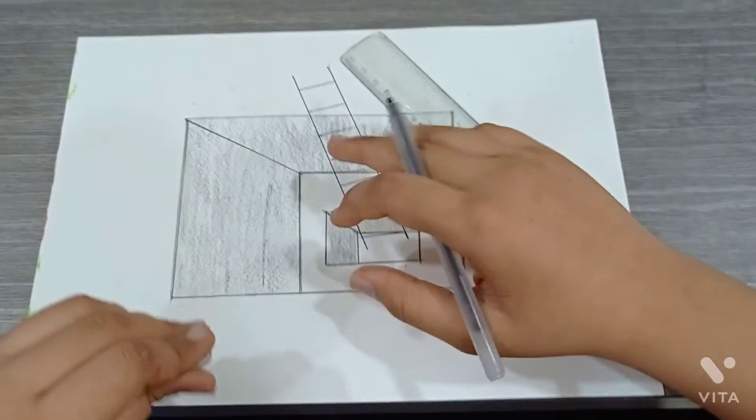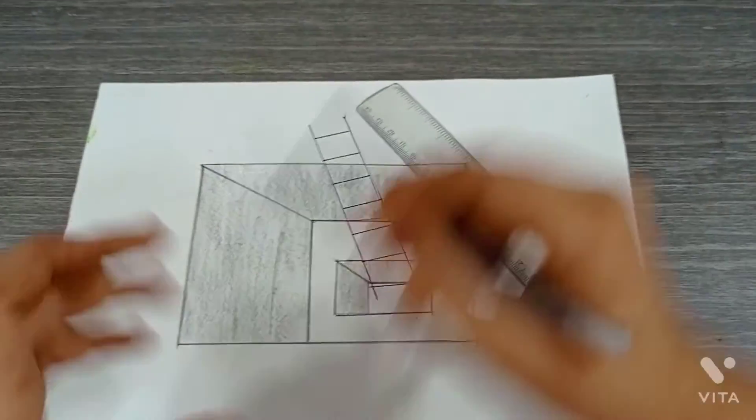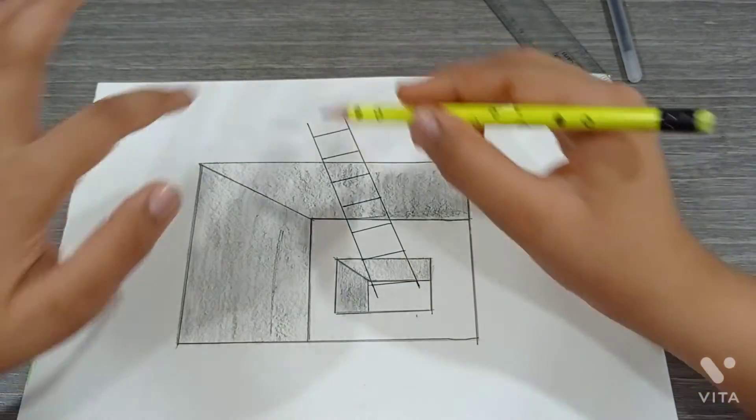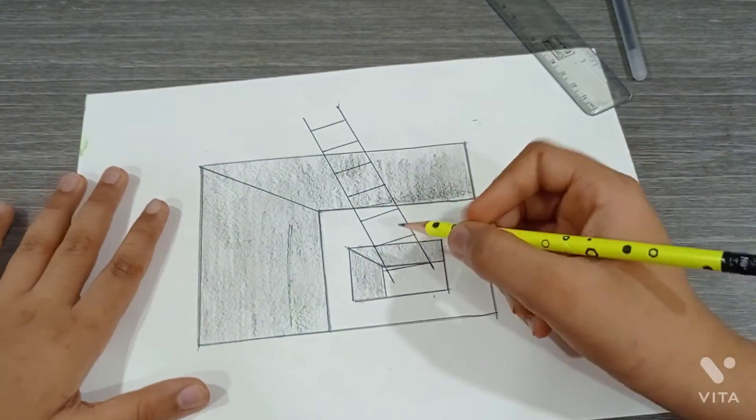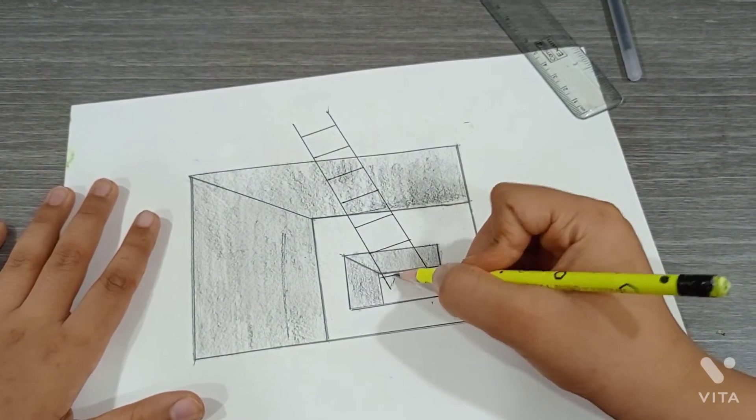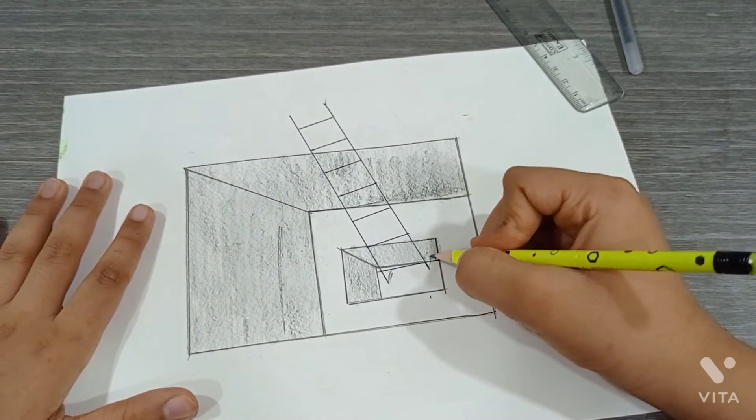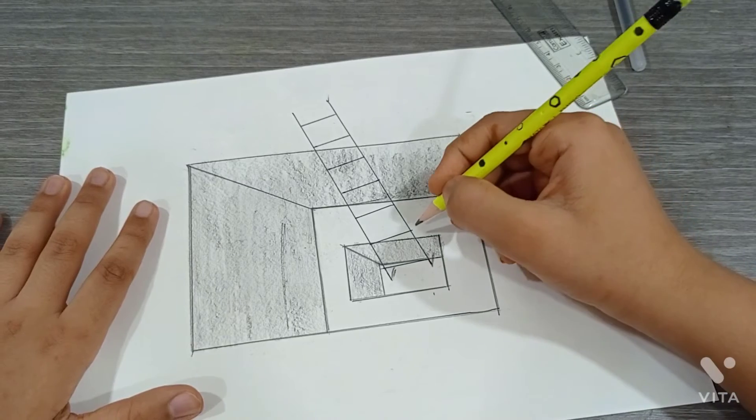This is done now. Put this pen and scale aside, take pencil. Now we have to draw the shadow of the ladder. I'll show you how to do it. Draw it in this way, now here.